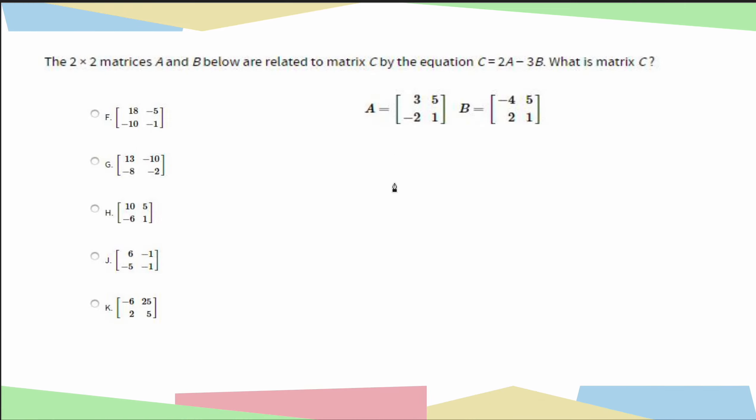All right, this is kind of a mixed review. This is where we're going to use two separate matrix topics. So here, it says the 2 by 2 matrices A and B below are related to matrix C by the equation C equals 2A minus 3B. What is matrix C?